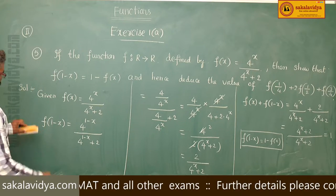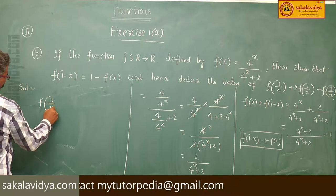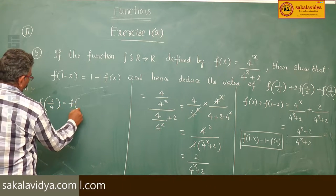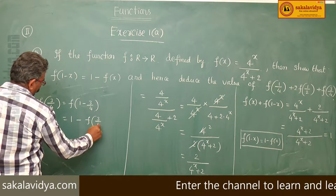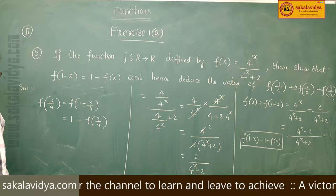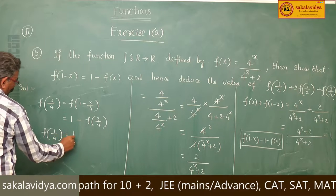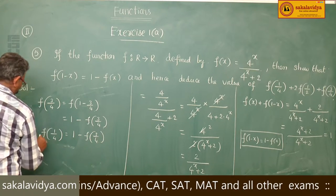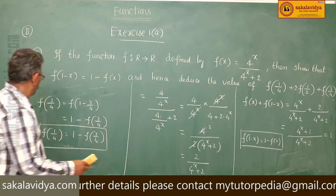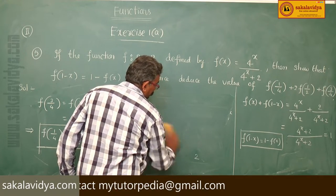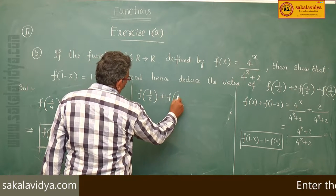Now we have to find the value f of 3 by 4. That is equal to f of 1 minus 3 by 4, equals 1 minus f of 3 by 4. So we get f of 1 by 4 is equal to 1 minus f of 3 by 4. Also, f of 1 by 2 plus f of 1 by 2 equals 1, that is f of 1 by 2 plus f of 1 by 2 equals 1.